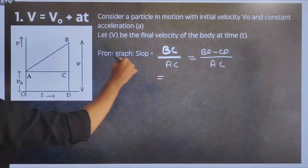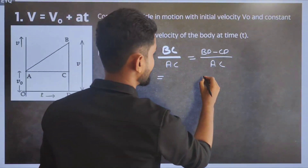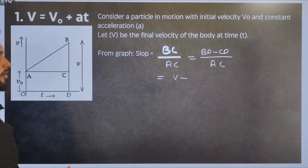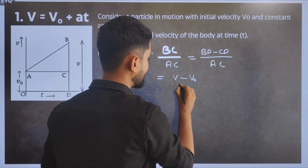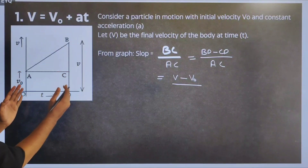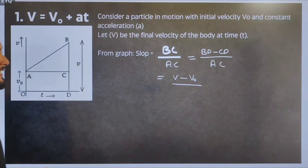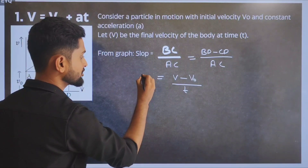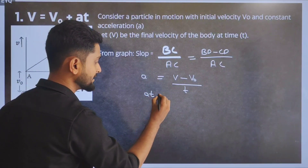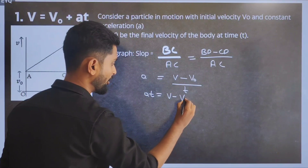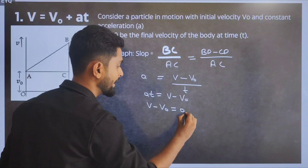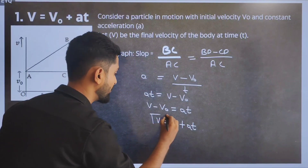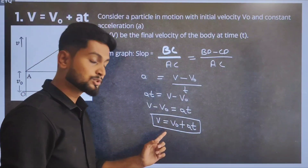From the graph, BD is V and CD is OA which is V₀, so the slope equals (V − V₀) / AC. AC equals OD which equals T, giving us (V − V₀) / T. Since the slope of the velocity-time graph gives acceleration, we have A = (V − V₀) / T. Cross-multiplying: AT = V − V₀, therefore V = V₀ + AT. This is our first kinematic equation, where V is final velocity, V₀ is initial velocity, A is acceleration, and T is time.